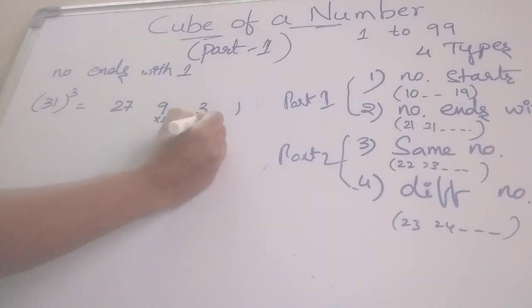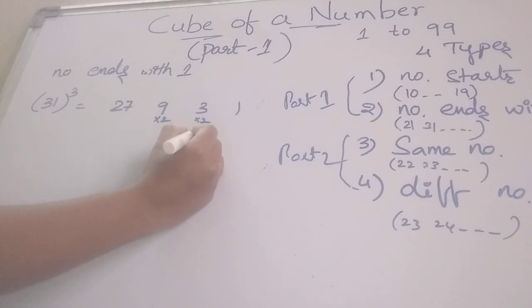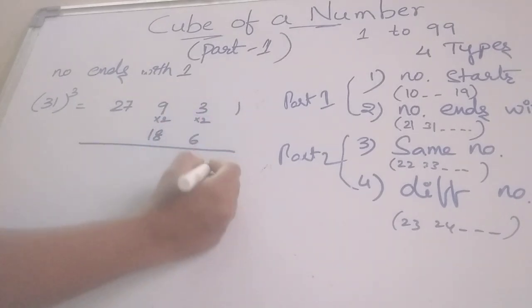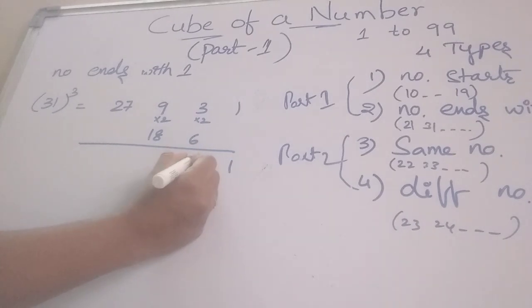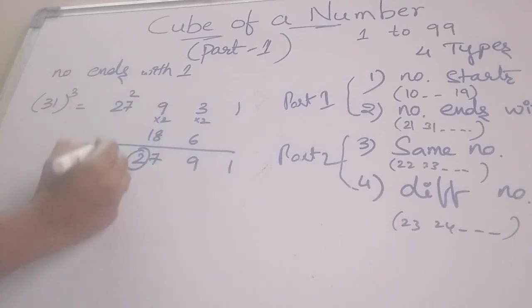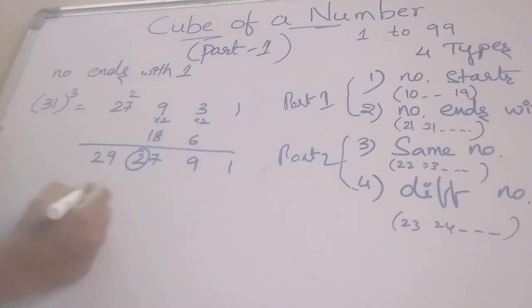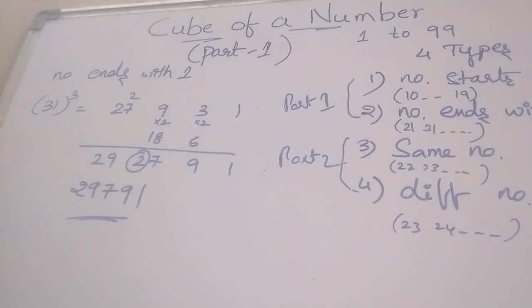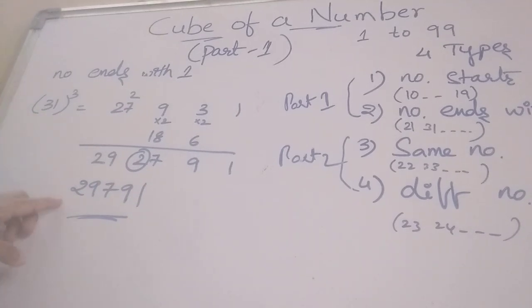After that we multiply by 2, giving 18 and 6. Then we add all these. We get 1, 9, and 27; taking 2 as a carry gives 29. The remaining numbers are 2, 9, 7, 9, 1. So the cube of 31 is 29791. This is the answer.